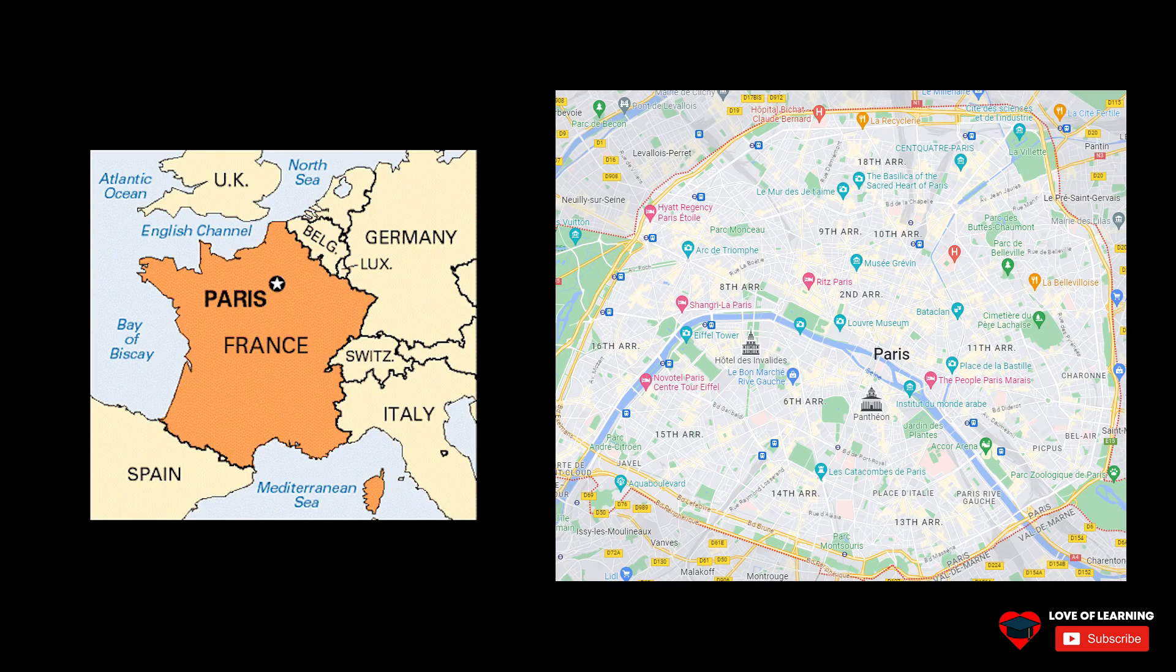These types of knowledge are not mutually exclusive, and one can have more than one type of knowledge about the same thing. For example, one can have propositional knowledge that Paris is the capital of France and procedural knowledge of how to get around Paris.